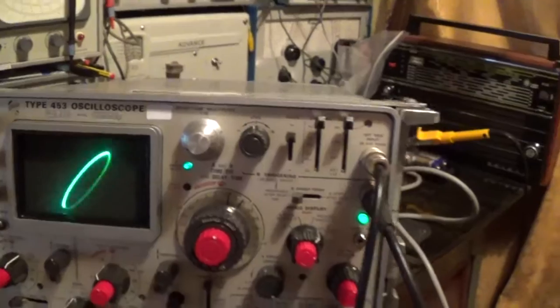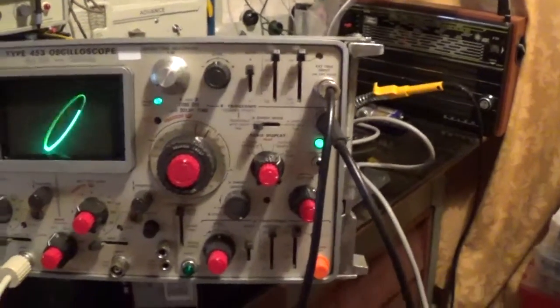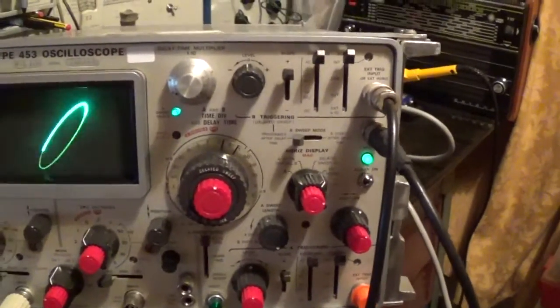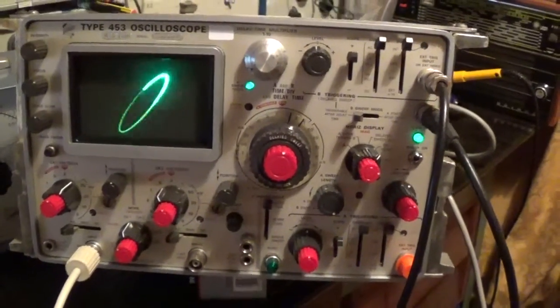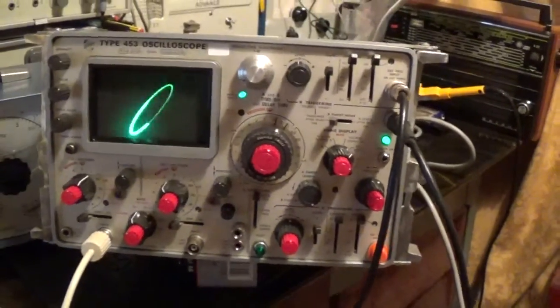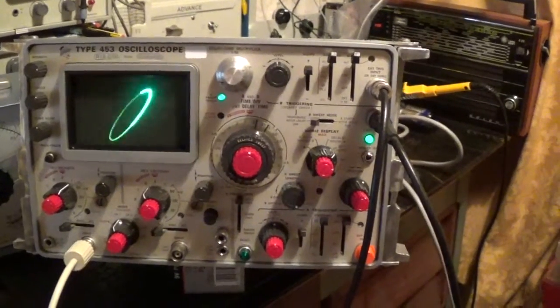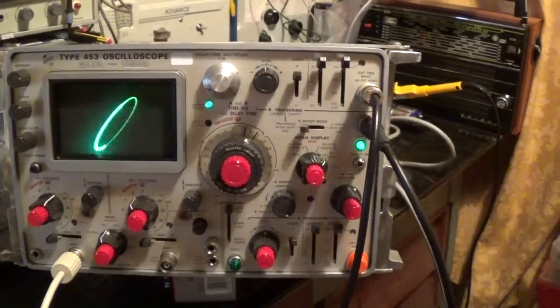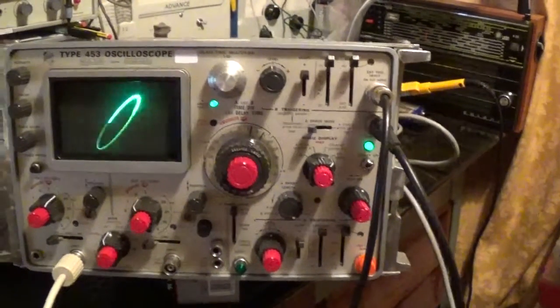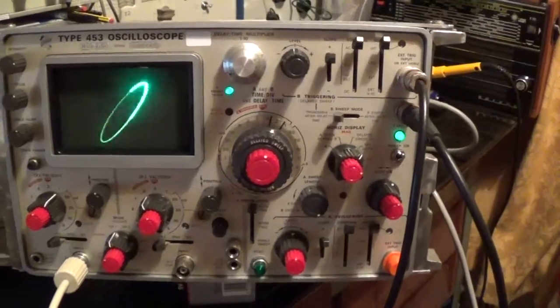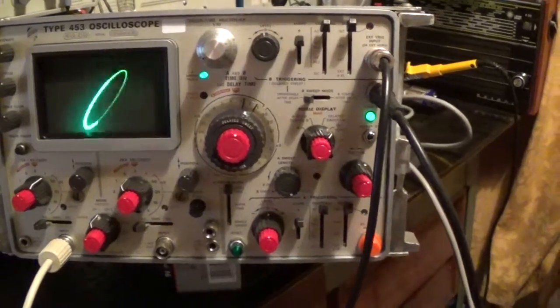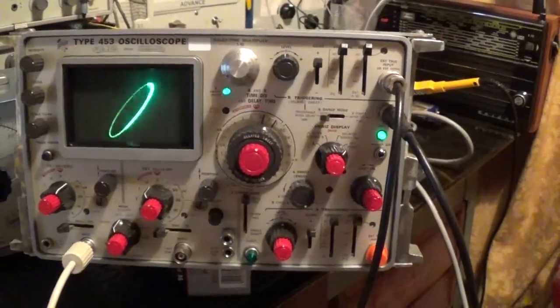Right, so there we are, basically that's it. Still need a case for it. So if you know of anyone who's got a junk 453 laying about with the bail arm and the case, I'd be very pleased to hear from you in the UK only of course. Right, anyway, thanks for watching.